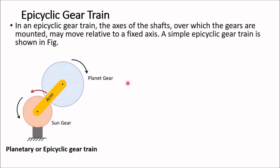In this video we will learn how to analyze a planetary or epicyclic gear train. In an epicyclic gear train, the axis of the shafts over which the gears are mounted may move relative to a fixed axis. This gear is rotating about its axis, while the axis itself is rotating about a point along with the arm. This gear is called the planet gear and the other is called the sun gear, because the planet gear orbits around the sun gear, held in orbit by the arm.